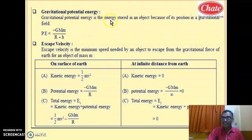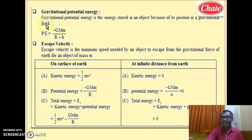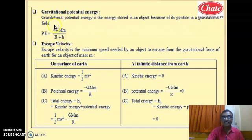So what is the definition of gravitational potential energy? Gravitational potential energy is the energy stored in an object because of its position in a gravitational field. Potential energy is a stored energy, and in this definition the key phrase is 'energy stored in an object by its position in a gravitational field.'